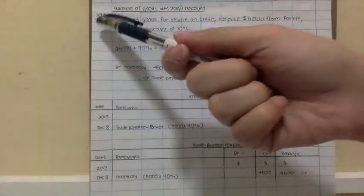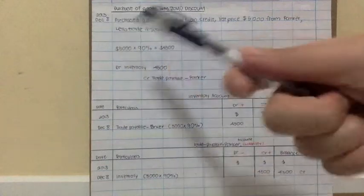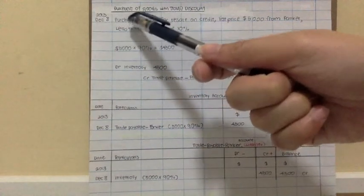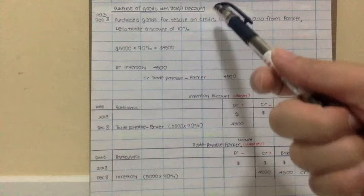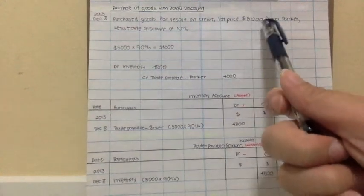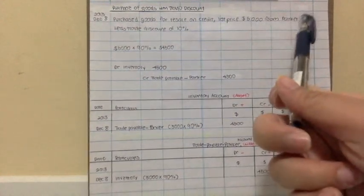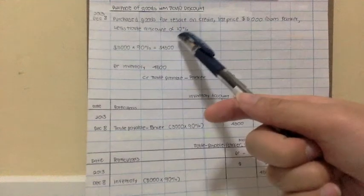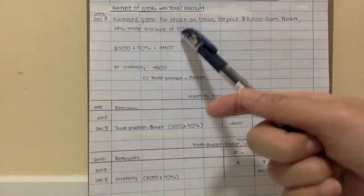The transaction normally has a date, December 8th. They say that the business AJ purchased goods for resale on credit, list price of $5,000 from Parker, less trade discount of 10%.